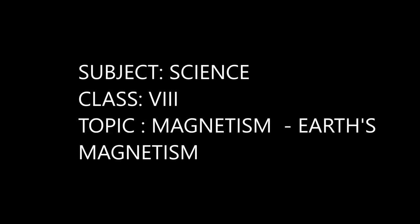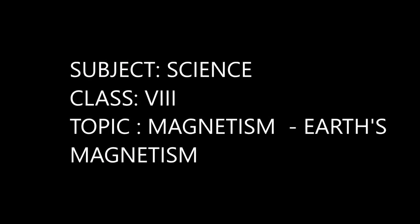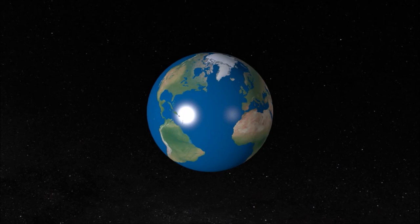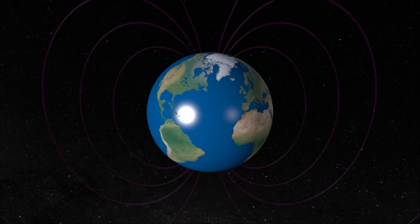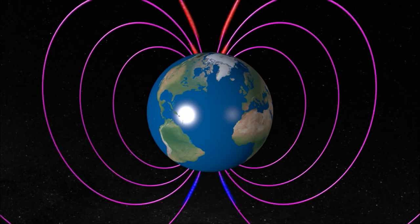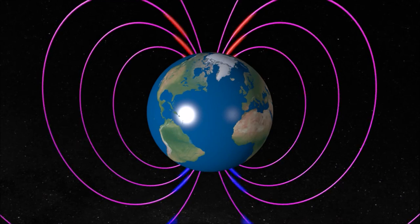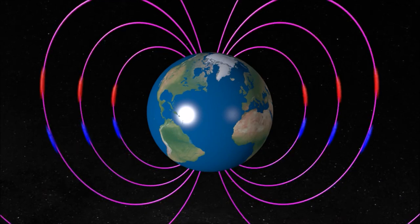Science Class 8 Earth's Magnetism. Earth has been assumed or imagined by scientists as a huge magnetic dipole. However, the position of the Earth's magnetic poles is not well defined in the Earth.